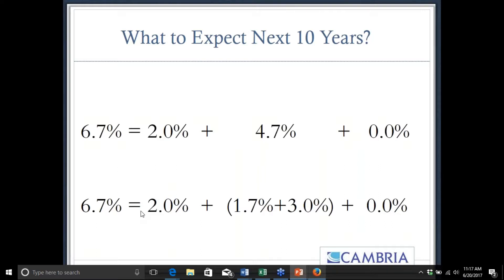What do those numbers look like now for the next 10 years? Starting dividend yield is much lower — about 2%. If we assume earnings growth is just as good as historically — 4.7% — and assume no valuation change, that already knocks the number down to 6.7%. Remember, people are expecting 10%. You can also break earnings yield into real earnings growth and inflation to account for the fact that companies are now paying out more in buybacks than dividends.